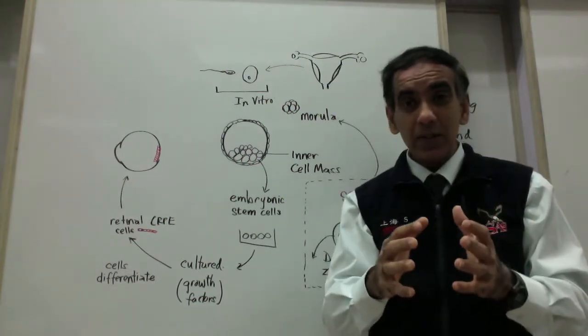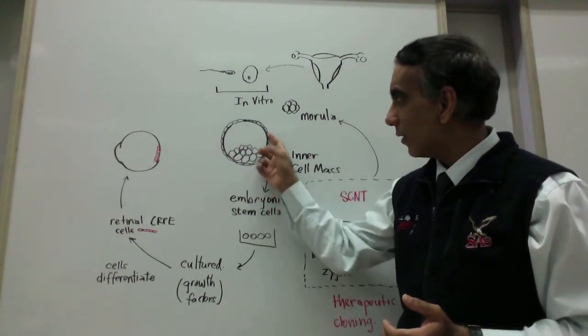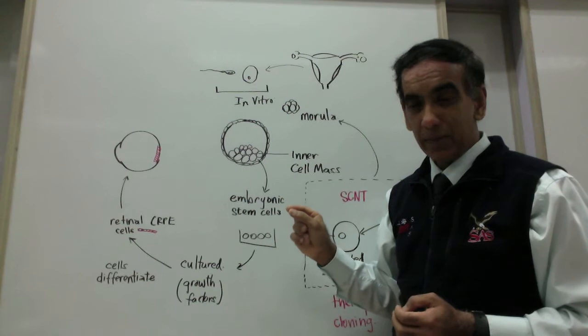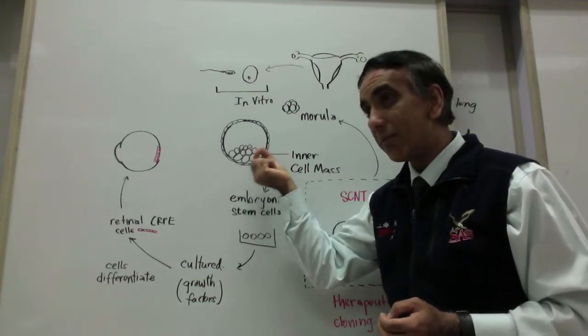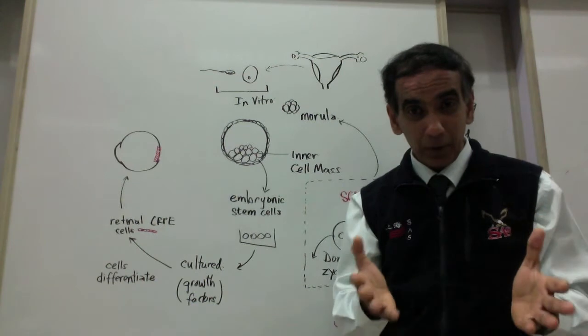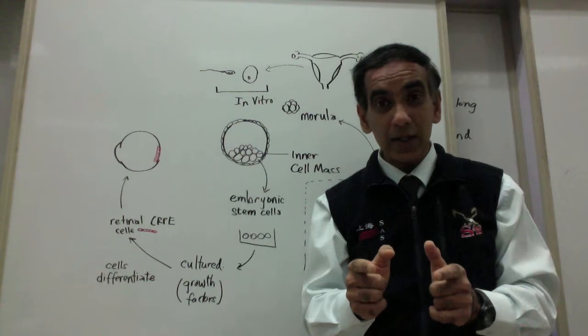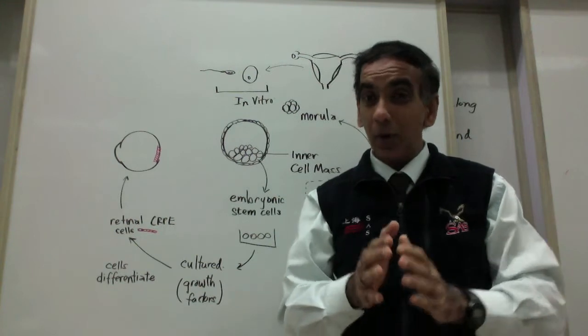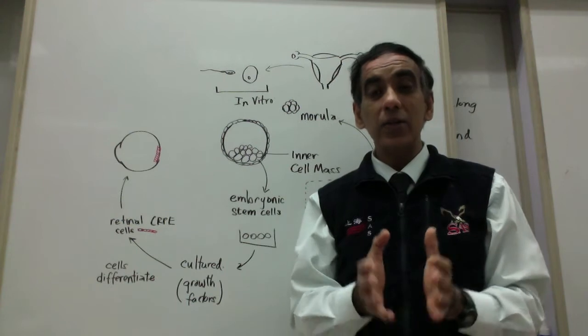But once the embryo begins to develop further to form the blastocyst, which consists of an outer layer or trophoblast, has now taken on the role of forming the extra embryonic membranes, and the cells within this hollow ball or the inner cell mass, they are the ones that possess the capacity to form all of the other cell types of the body minus the extra embryonic membranes. These cells are known as pluripotent because they can form all of the cell types of the body but they cannot on their own give rise to a new organism.